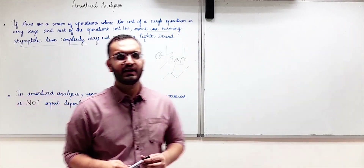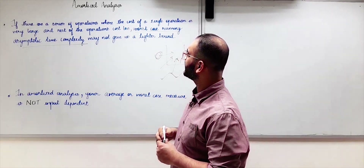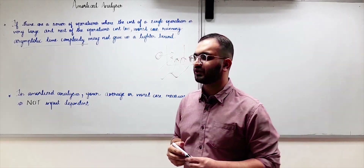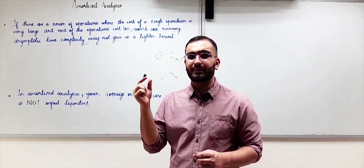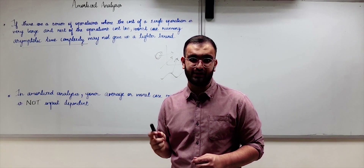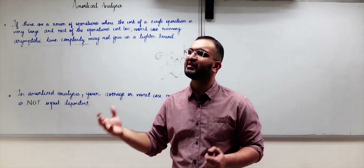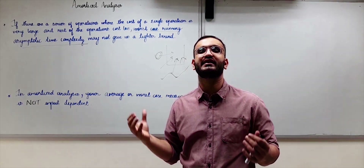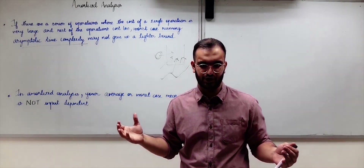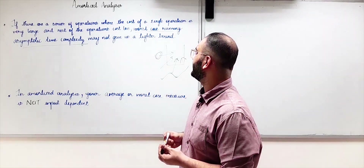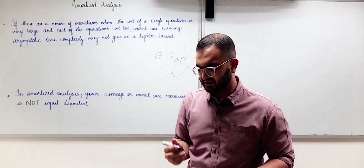What this means is that in asymptotic time complexity computation, what we do is find the operation with the worst-case time complexity and multiply it by the number of operations to get the total time complexity. But in such cases, this is not a useful method.